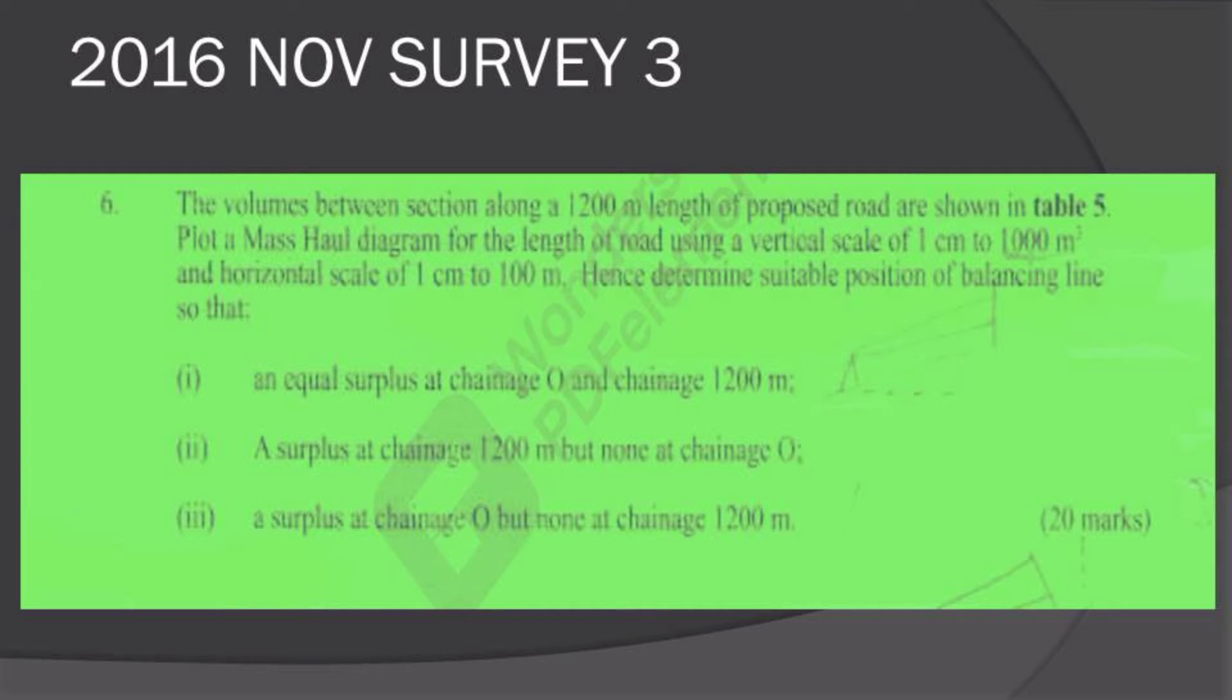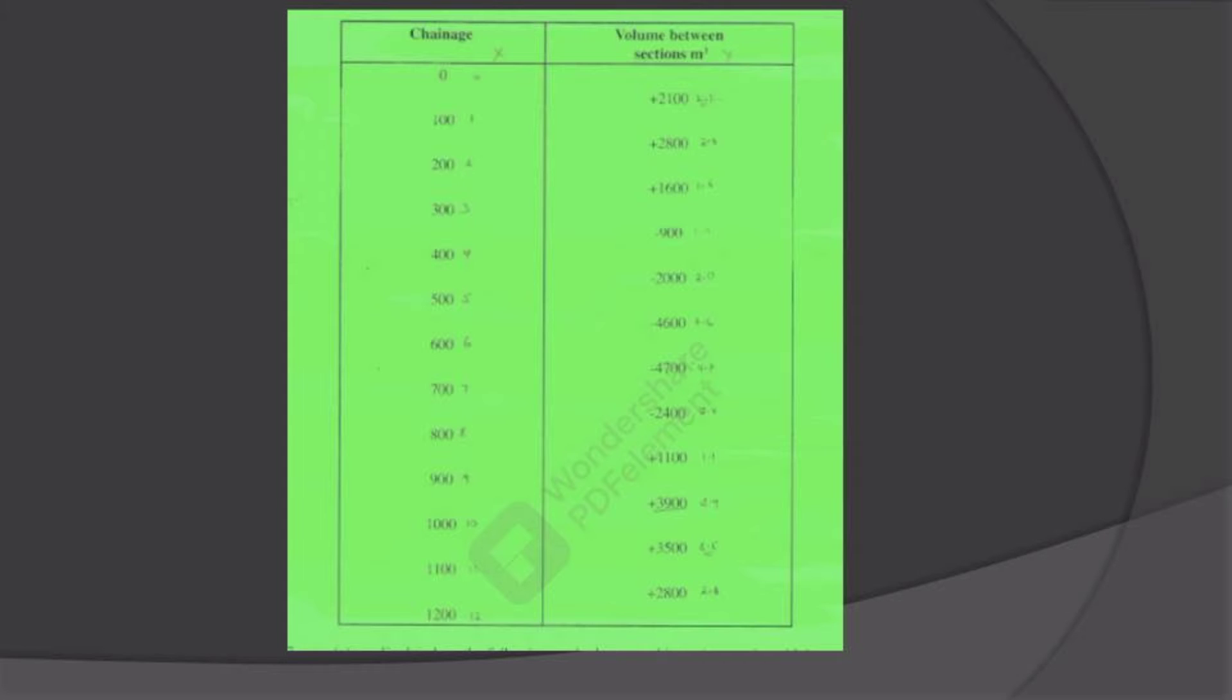Here we have been given a table having two columns. On the first column we have the chainages, on the second column we have the volume between sections in meters cubic. We have our chainages from 1 up to 1200, and then we have been given volumes for the same. We have a volume with a plus and also we have a volume with a negative sign on top, so we are going ahead and we'll see where those signs apply and in which criteria we are going to use them.